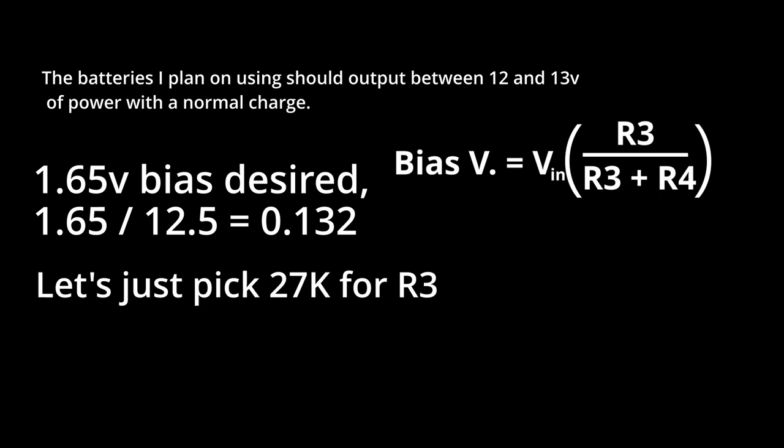If I choose 27k for the smaller of the pair, because that's just one of the values that I have, and divide 27 by 0.13, I get about 207. So, if I choose a value for R4 around 200 kOhms, that should work fine.